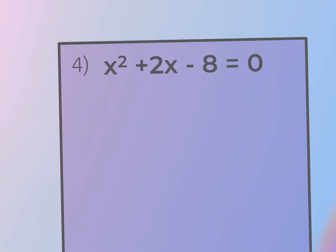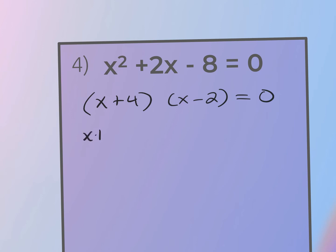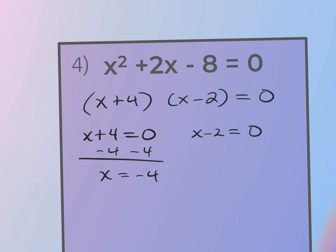For number four, it's a trinomial already set equal to zero. I'm looking for factors of negative eight that add to give positive two — those are positive four and negative two. My advice: do a quick FOIL check to confirm the middle term. Setting each factor equal to zero: x + 4 = 0 gives x = −4, and x − 2 = 0 gives x = +2.